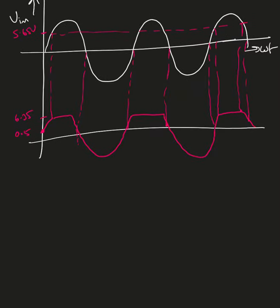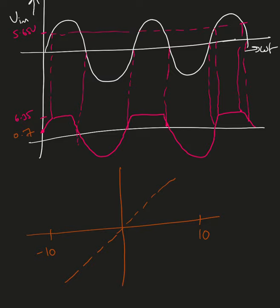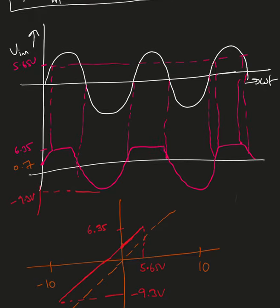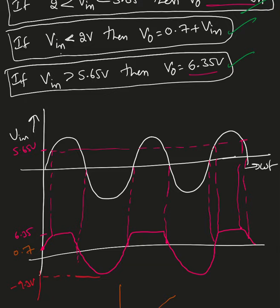Now I'll draw the transfer characteristics. The input varies from plus 10 to minus 10 volts. The output starts at 0.7 volts (not 0.5), rises linearly up to 6.35V, where the input is 5.65V. On the reverse side, the output is constant. At V_n = negative 10V, V_out = 0.7 plus (negative 10) = negative 9.3 volts.